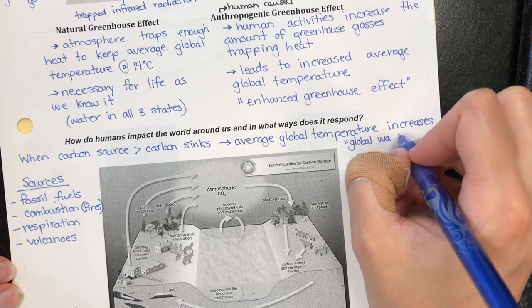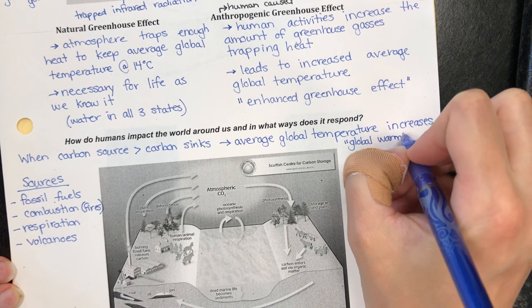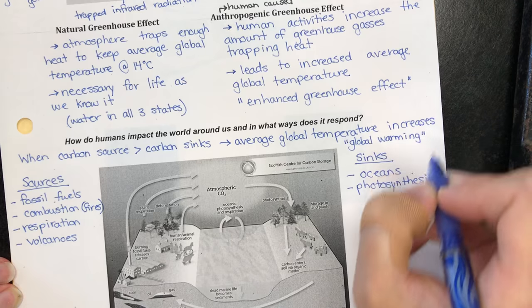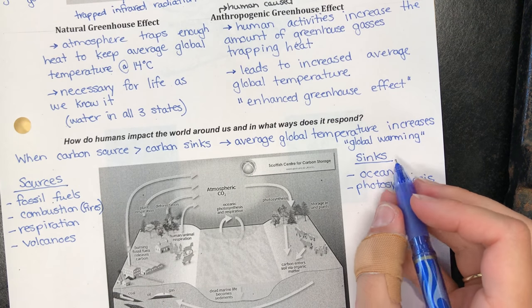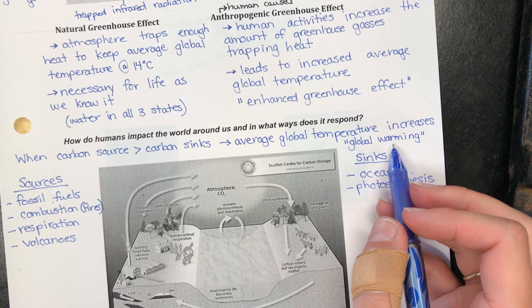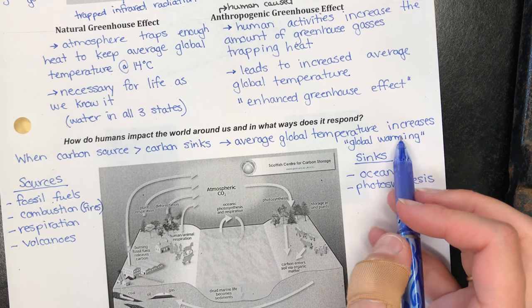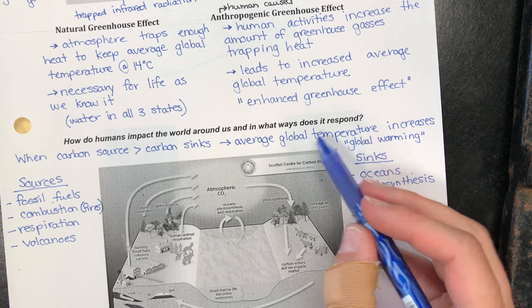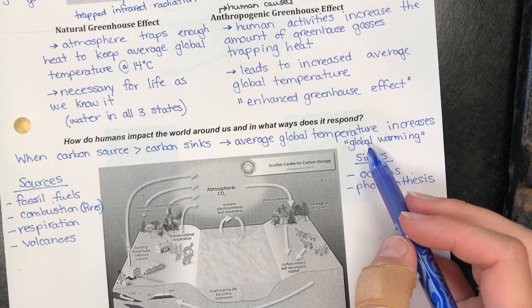But climate change is a lot more than just global warming. There's a lot of other things that are going on and there's a bit of a misconception that everywhere gets hotter. That's not necessarily true. There are places in the world that are actually getting colder, but as an average over the entire planet our average is increasing.